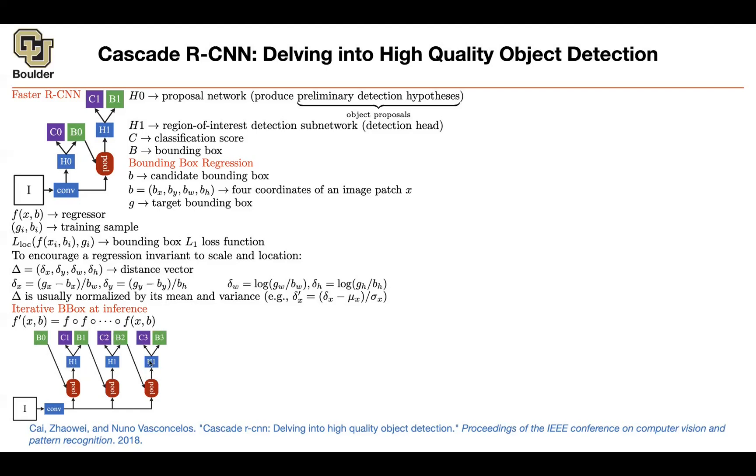Then you're going to have iterative bounding box at inference. So there is no training going on here. This is all happening at inference. And there is actually a paper before this one doing that. But here is an idea. What if we can change these heads? They don't have to share parameters. And then it's going to enable you to increase your detection quality.